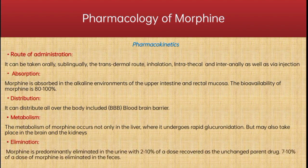In elimination, morphine is predominantly eliminated in the urine, with 2 to 10% of the dose recovered as the unchanged parent drug. Additionally, 7 to 10% of the dose of morphine is eliminated in the feces.